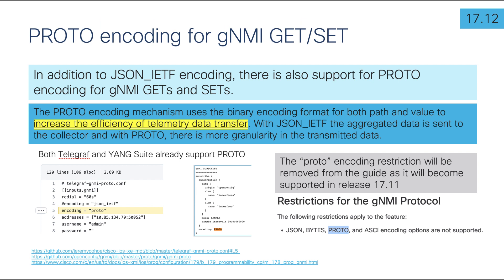In the programmability and automation area, IOS XC 17.12 brings enhanced features. This release introduces proto-encoding for GNMI get and set operations. In previous IOS XC releases, proto-encoding for GNMI telemetry subscription was already enabled. The proto-encoding mechanism uses a binary encoding format for both path and value to increase the efficiency of telemetry data transfer. With JSON-IETF, aggregated data is sent to the collector, whereas with proto-encoding there is more granularity in the transmitted data.